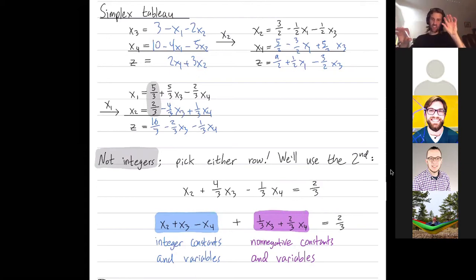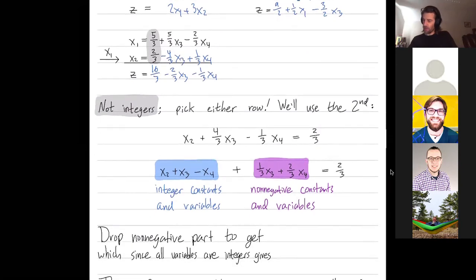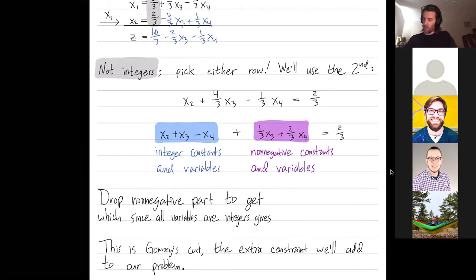So it's just splitting into two terms, an integer part and a non-negative part. So let's drop the non-negative part, and we'll now get an inequality. So if we drop the non-negative part, because it's non-negative, I know that x2 plus x3 minus x4 is at most 2 thirds. Seems like I haven't done much. Just drop this non-negative part, take the equality to an inequality. But the left-hand side is an integer. So any integer at most 2 thirds is also at most zero. So let's deduce a better bound. Any integer at most 2 thirds is also at most zero. This is called Gomory's Cut, and we take this new constraint and add it to our list of constraints.